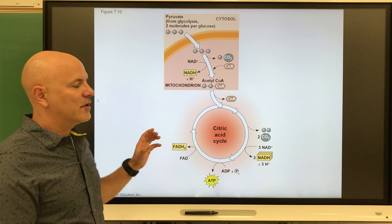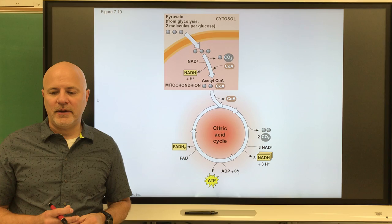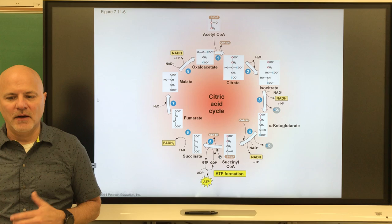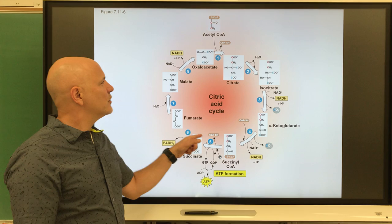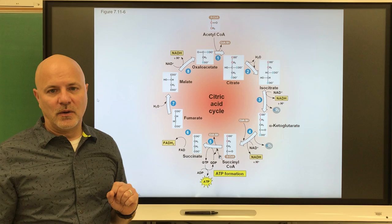The next step is the Krebs cycle, also known as the citric acid cycle, discovered by Sir Hans Krebs in the 1930s. This also occurs in the matrix of the mitochondria. It's called the citric acid cycle because citrate is the first product of this reaction. This is a cycle, so the final product — oxaloacetate — is also one of the first reactants. Anytime we have a cycle, we end up with what we started with.